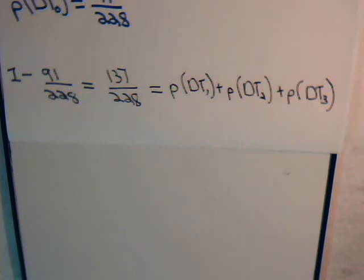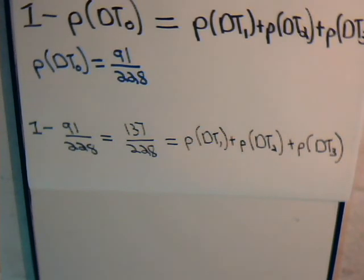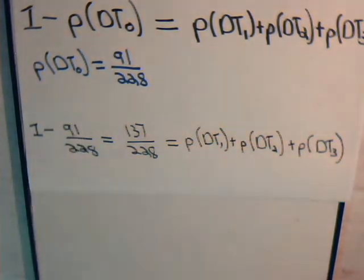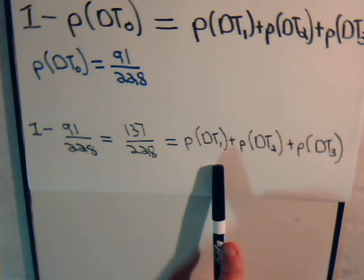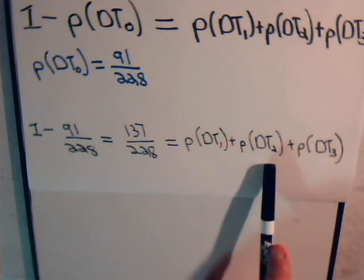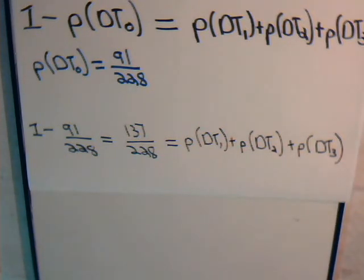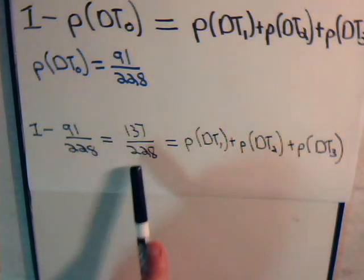What we're going to do in this video is calculate the probability of having exactly one selected transistor being defective, then the probability of exactly two being defective, and then all three being defective. We'll add them up and see if we get the same number.